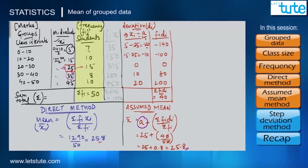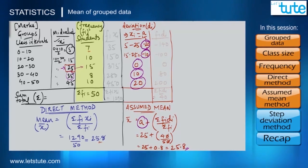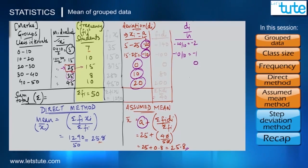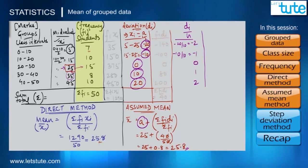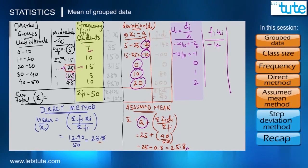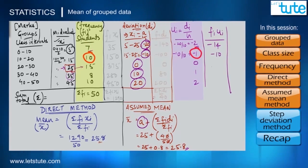Going a step ahead of the assumed mean method: looking at all the deviations, there is a common factor of 10 in every deviation. We divide each deviation by that common number h, creating a new variable ui. So −20 ÷ 10 = −2, −10 ÷ 10 = −1, 0 ÷ 10 = 0, 10 ÷ 10 = 1, and 20 ÷ 10 = 2. This ratio of deviation to the common number is called ui. We then find the product fi·ui: 7 × (−2) = −14, 10 × (−1) = −10, and so on.